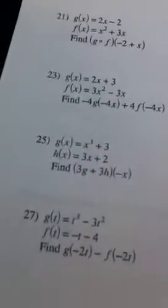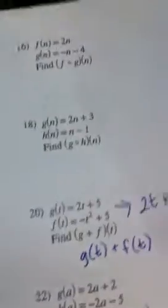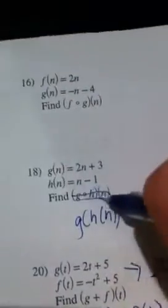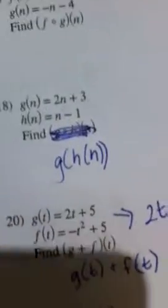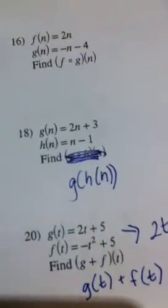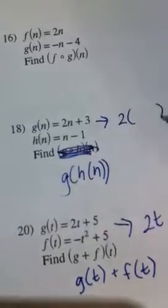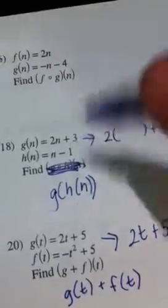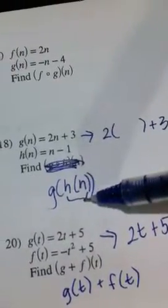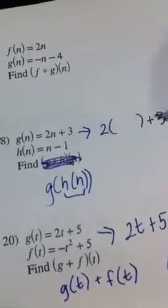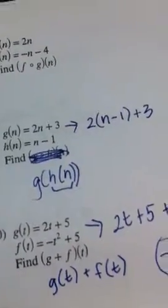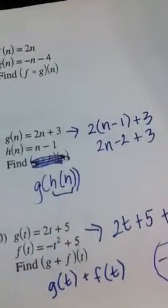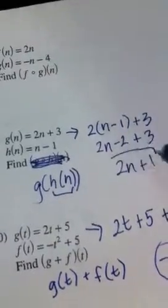Let's look at number 18, G of H of N. You start with your outside function, which is the G function, 2N plus 3. But you replace the N. Notice there's still a 2 and still a plus 3, but I don't have an N anymore. In its place, you put the H of N function. N minus 1 is my H function. That's what's going to go in the blank right here. You simply distribute and simplify. So I have 2N minus 2, and then plus 3. Just combine negative 2 plus 3, and you get plus 1. Final answer.